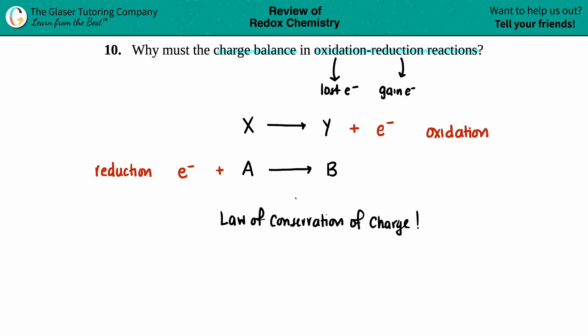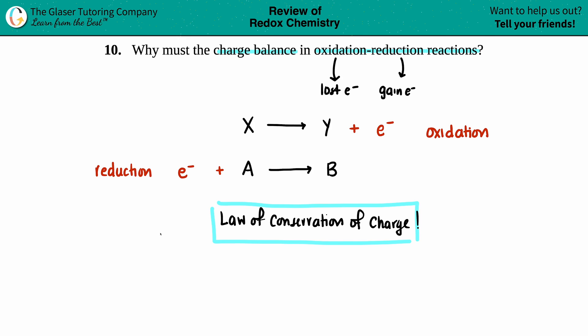You cannot just lose electrons along the way — everything has to be accounted for. Think of it like bookkeeping: whatever comes in has to go out. Whatever electrons are lost in oxidation have to be gained in reduction. That all comes back to the law of conservation of charge, and that is the answer.